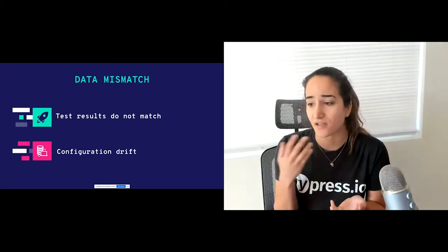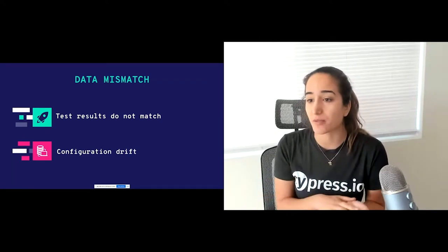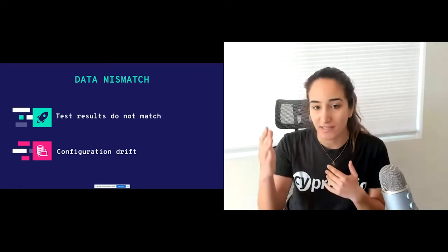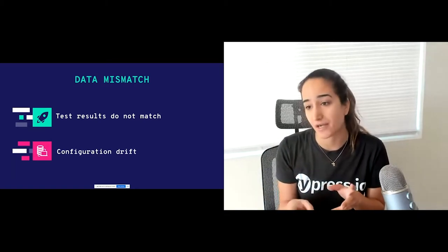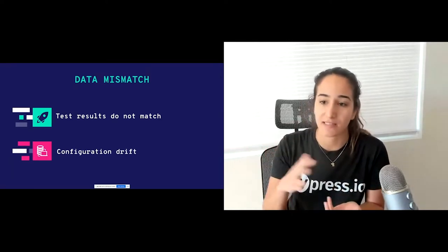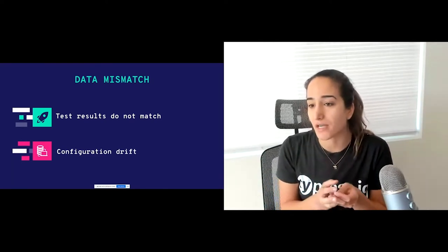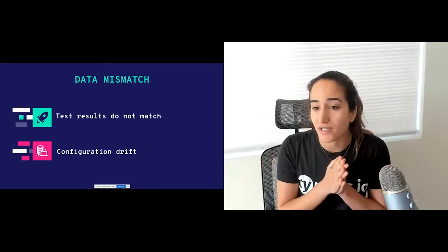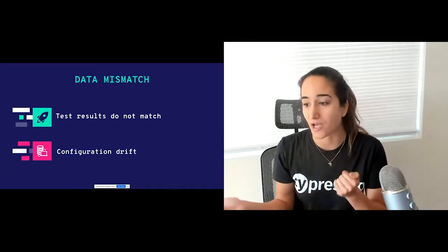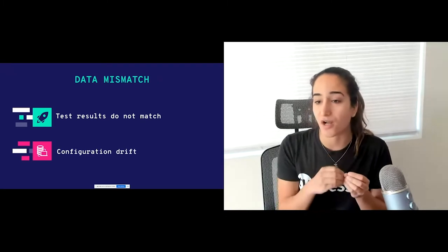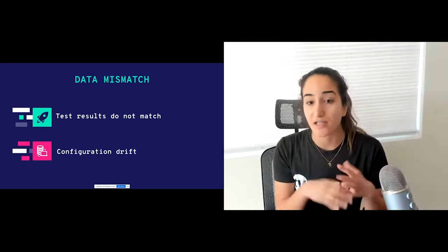The next thing is called configuration drift. Let's say you get paged one night because there's an incident for your mobile application. You look at the logs, identify the problem, and in order to fix it, you have to update a specific configuration in production. You make the change in production and go back to sleep because it's the middle of the night. Even though you fixed the issue, you've also created an even bigger divide between your staging and production environments because you didn't make the same change in staging. This is called configuration drift.